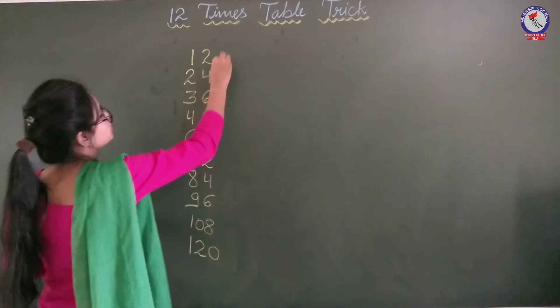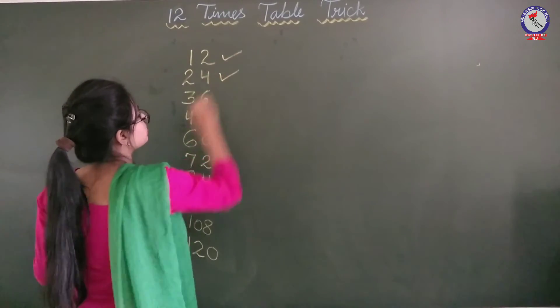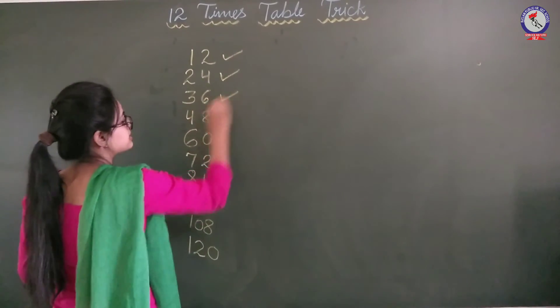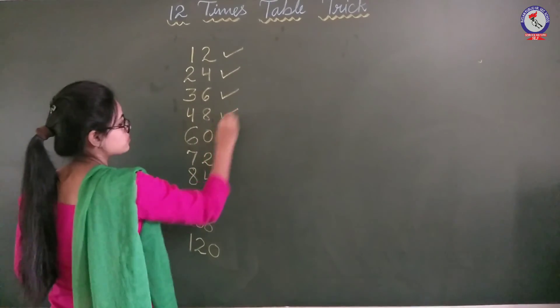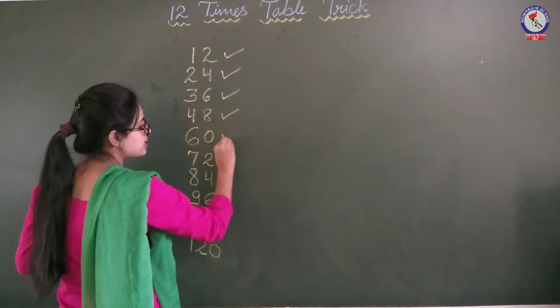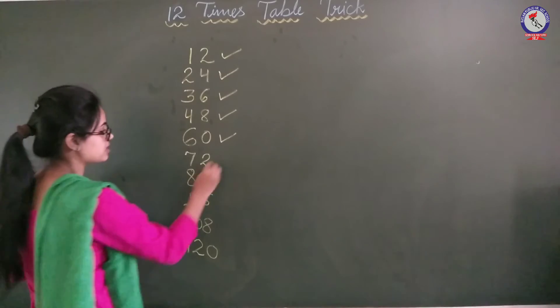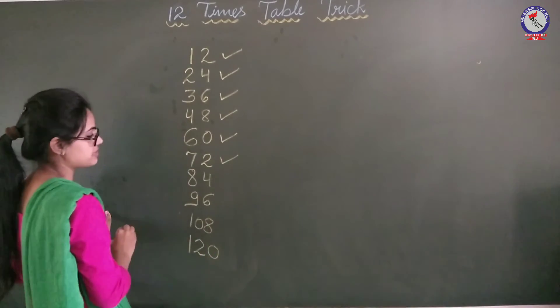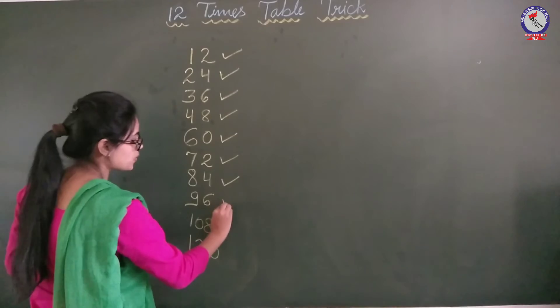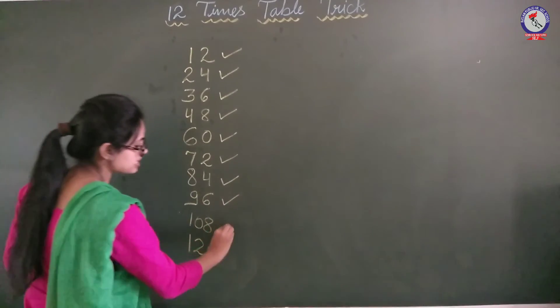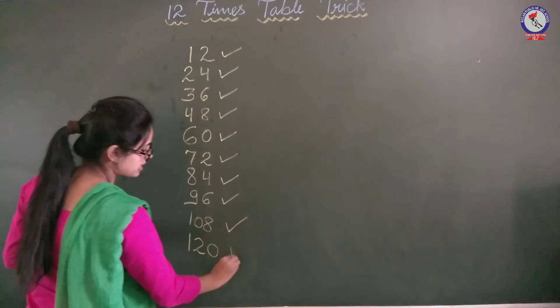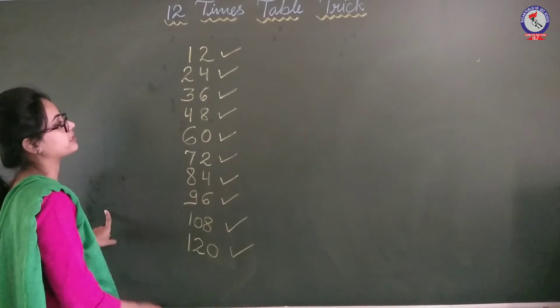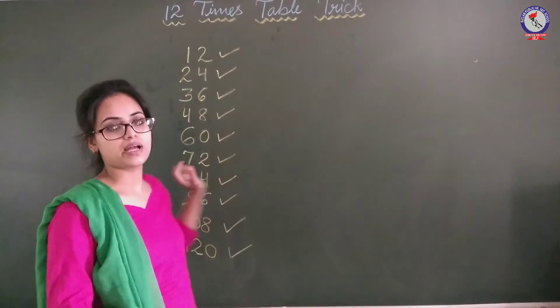So now this is table of 12. 12 1s are 12, 12 2s are 24, 12 3s are 36, 12 4s are 48, 12 5s are 16, 12 6s are 72, 12 7s are 84, 12 8s are 96, 12 9s are 108 and 12 10s are 120. So this is table of 12.